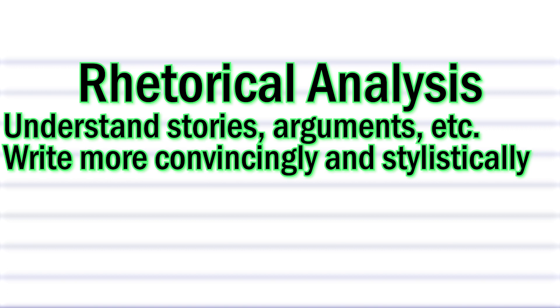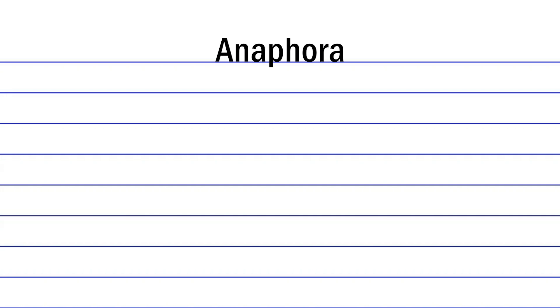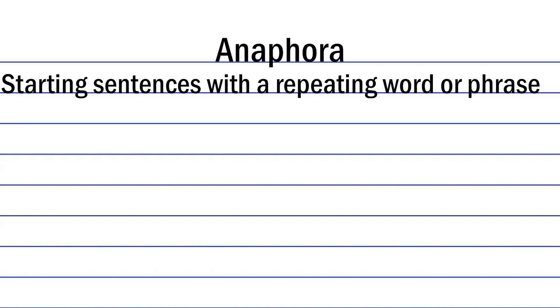Anaphora is a strategy where you start several sentences in a row with the same word or phrase. This concept is commonly used in poetry to change the balance, meter, and rhythm of each line. Take Sonnet 66 written by Shakespeare, for example.